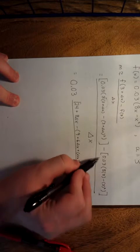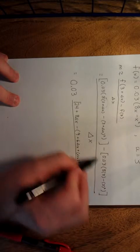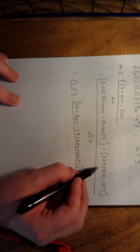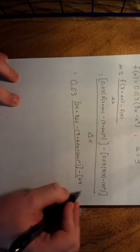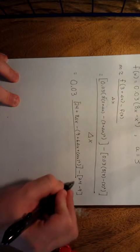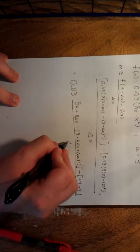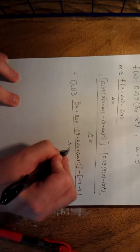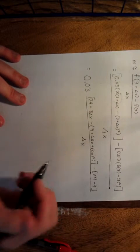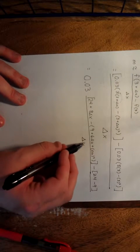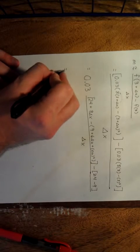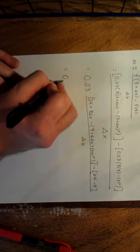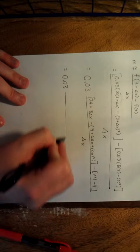We distribute the minus sign: 24 + 8Δx − 9 − 6Δx − Δx², minus (24 − 9), which gives us minus 15. Now, we obviously can't plug in delta x equals 0 — that would give a 0 in the denominator. So let's keep simplifying and see what happens.